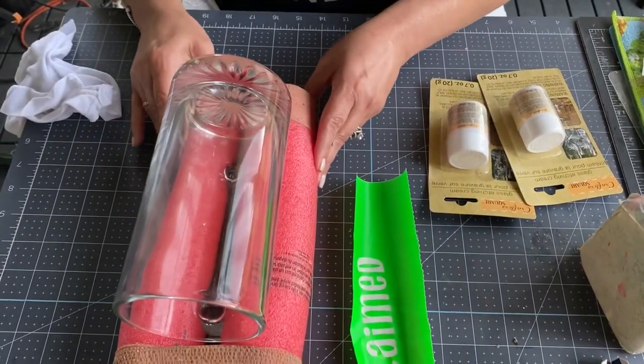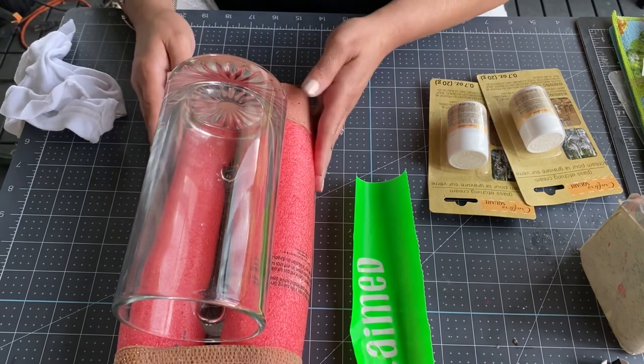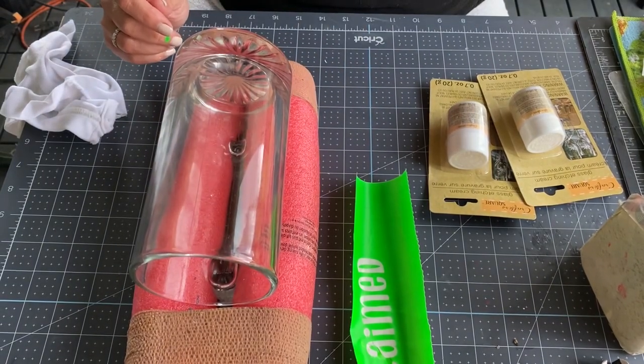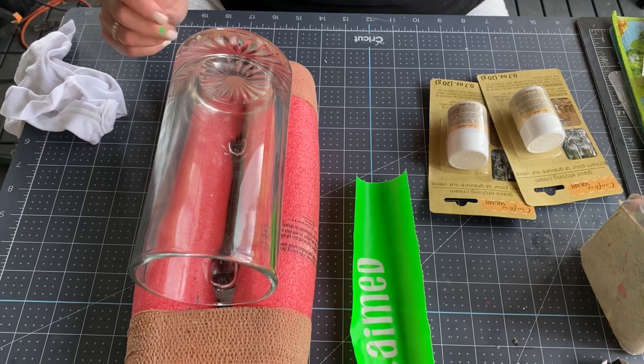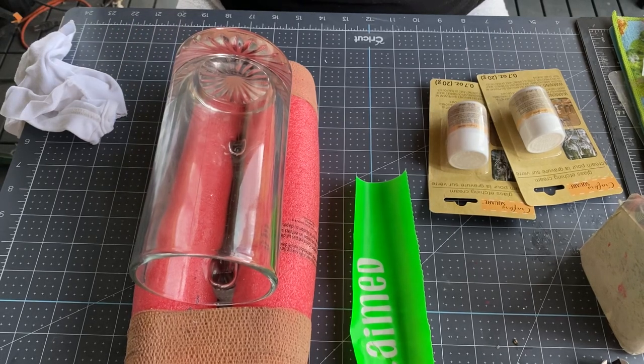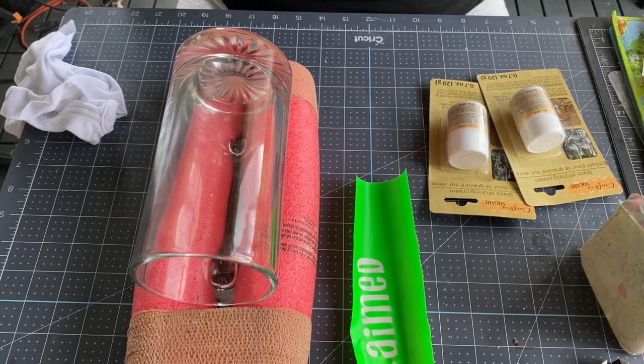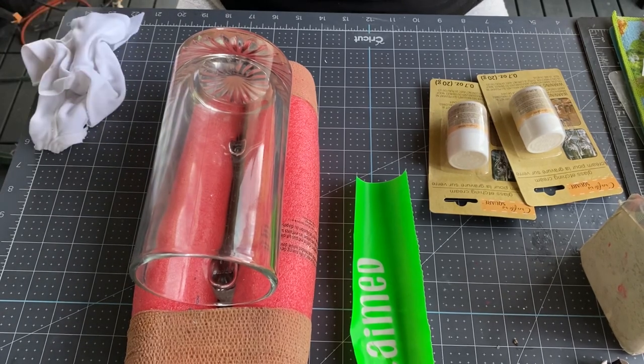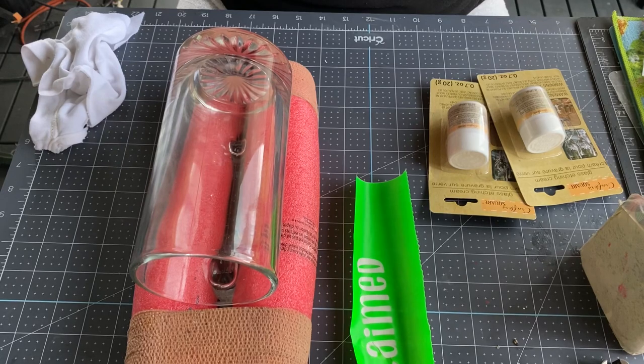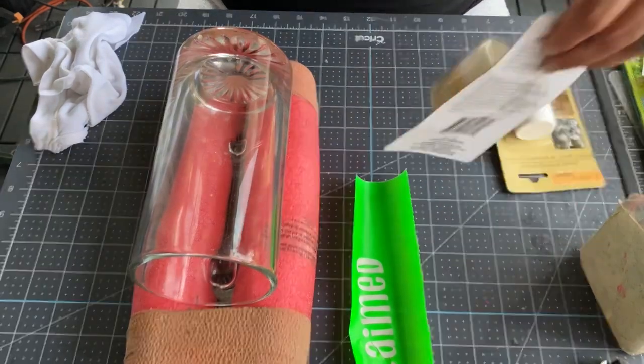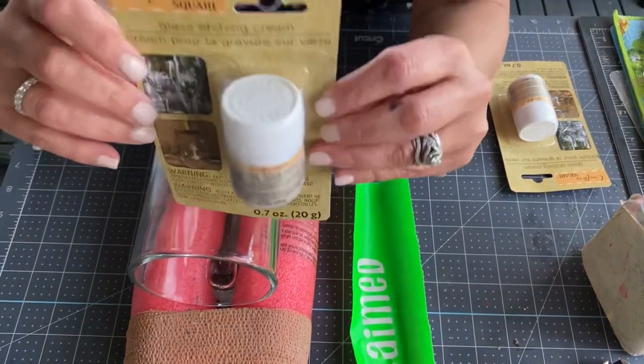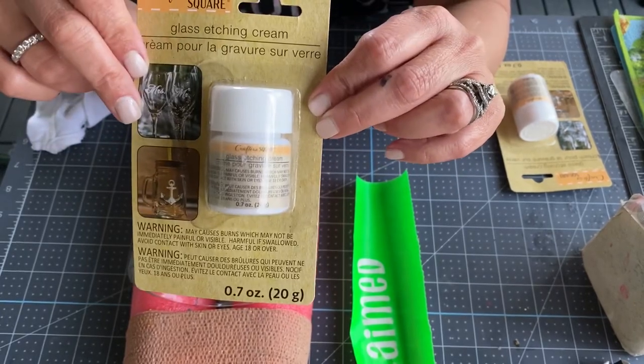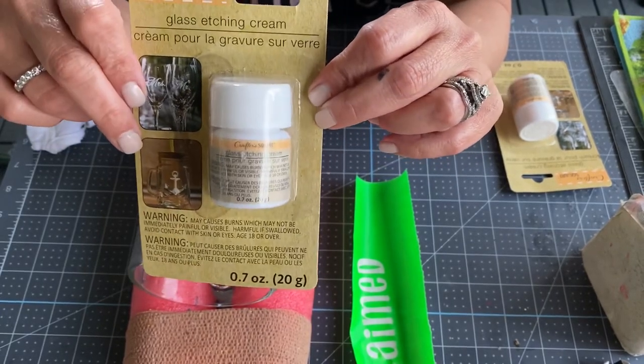So what we're going to do today, we're looking at the fact that the Dollar Tree has really been coming out with a lot of products for crafting. They're really trying to get in the game. They've had the Cricut products that we looked at, and I was very surprised. I couldn't believe that I found this. This is glass etching cream. We're going to see how well this works today.